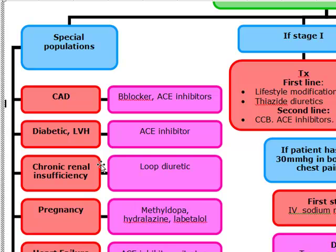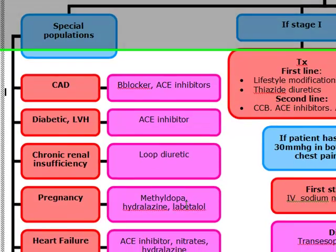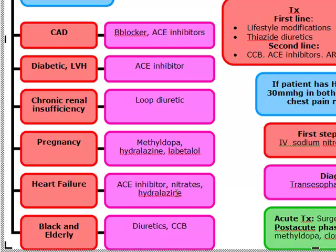For chronic renal insufficiency, we want to give these patients a loop diuretic. If the patient is pregnant, we give methyldopa, hydralazine, or labetalol. If the patient has heart failure, we go with ACE inhibitors, nitrates, or hydralazine. In the African American population and elderly, we go with diuretics and calcium channel blockers.